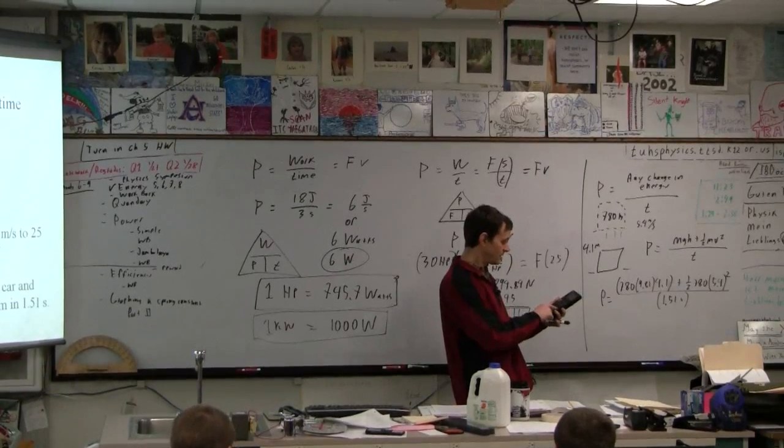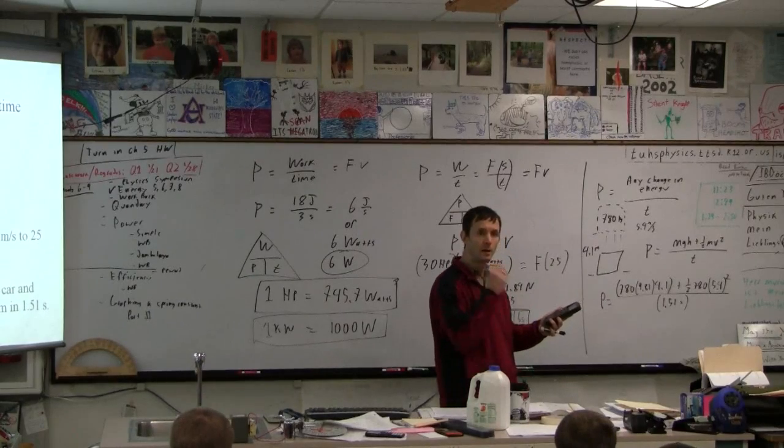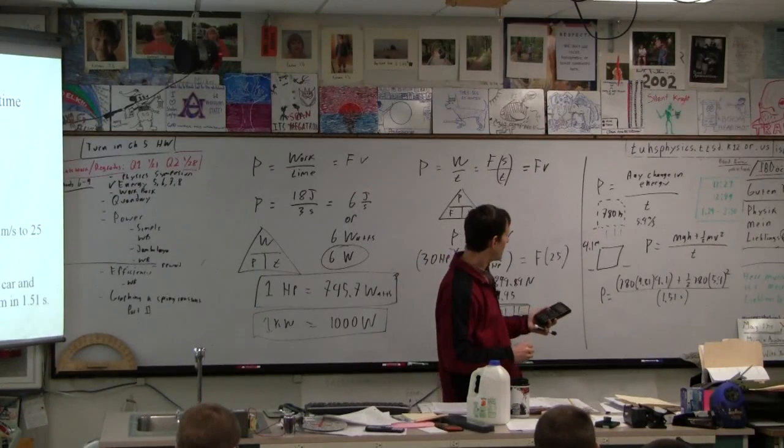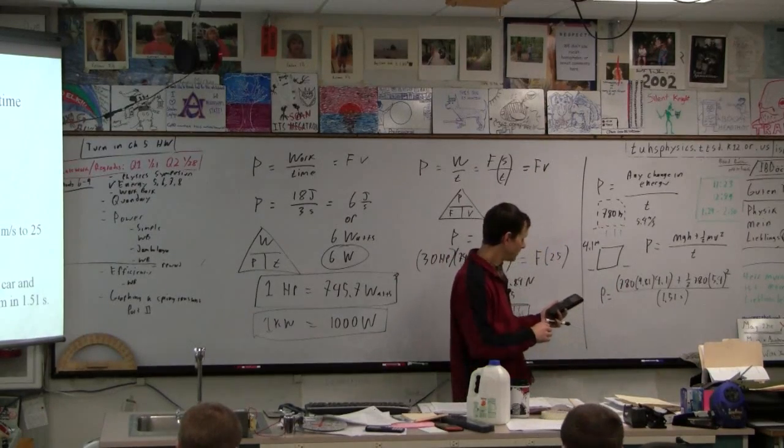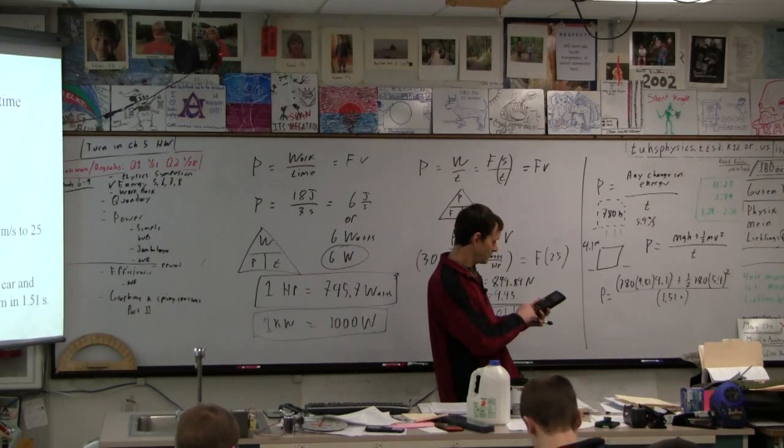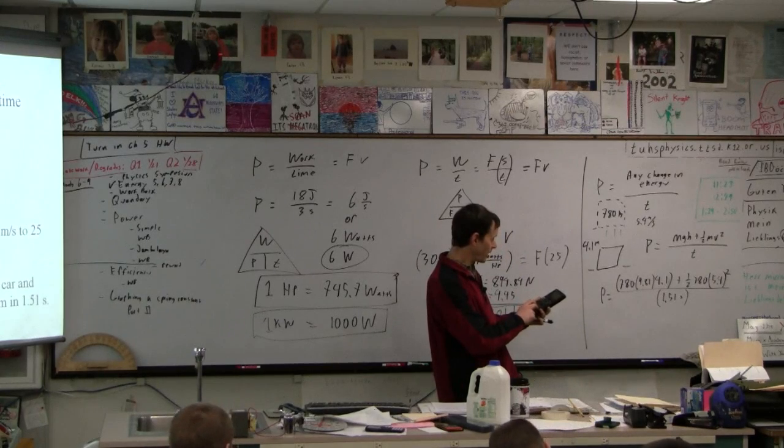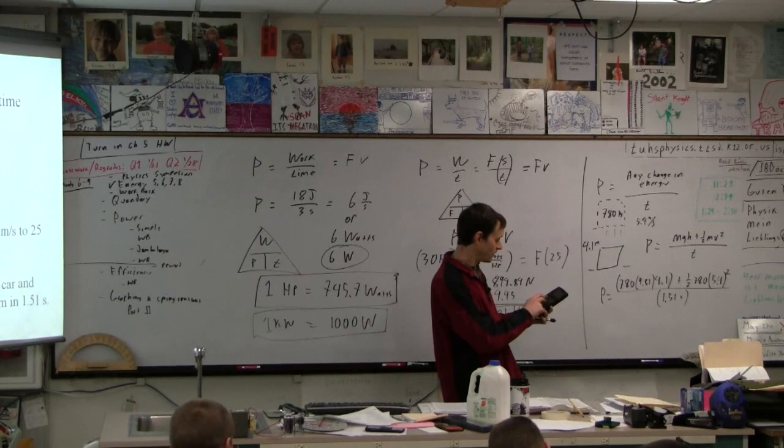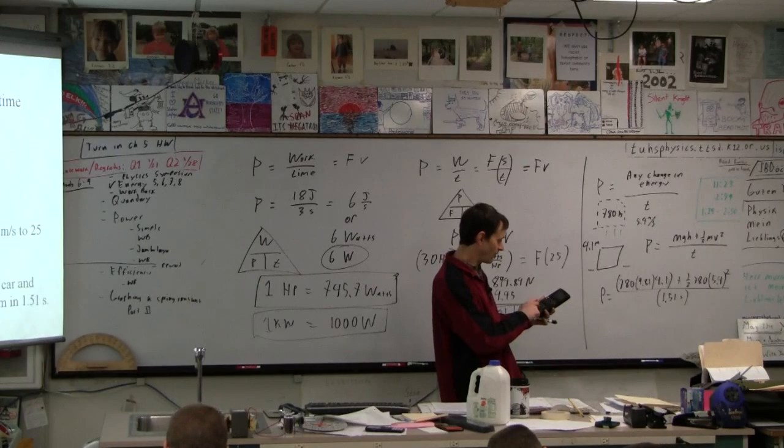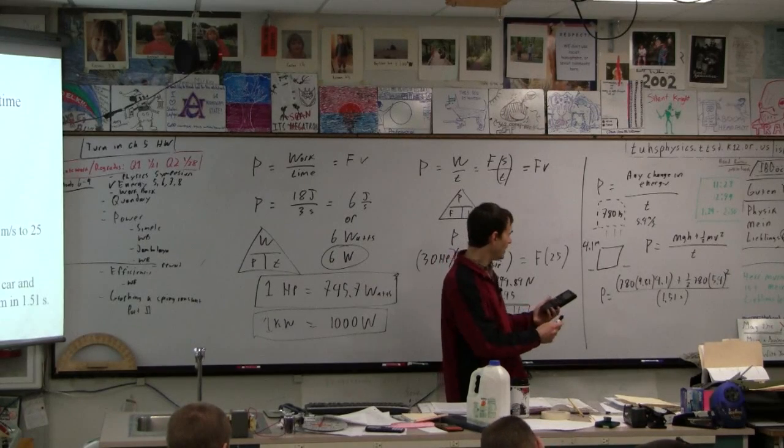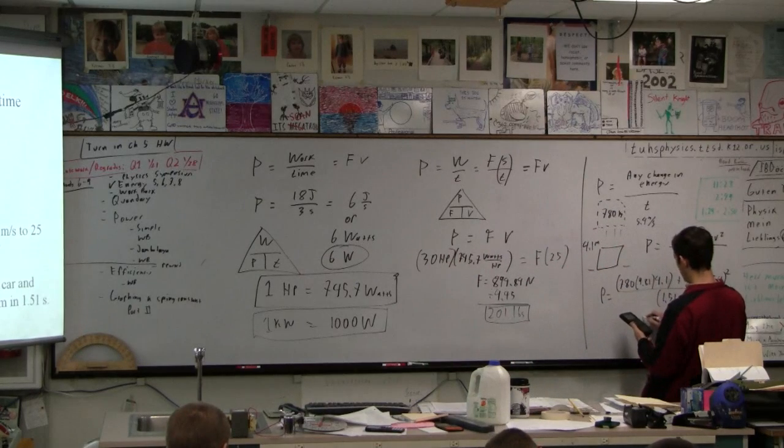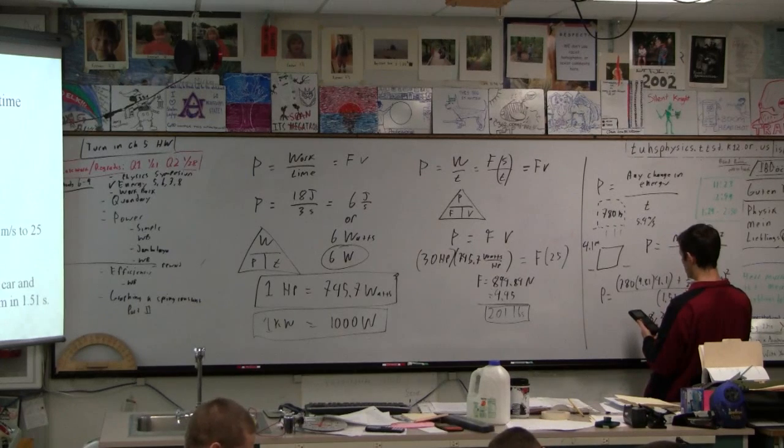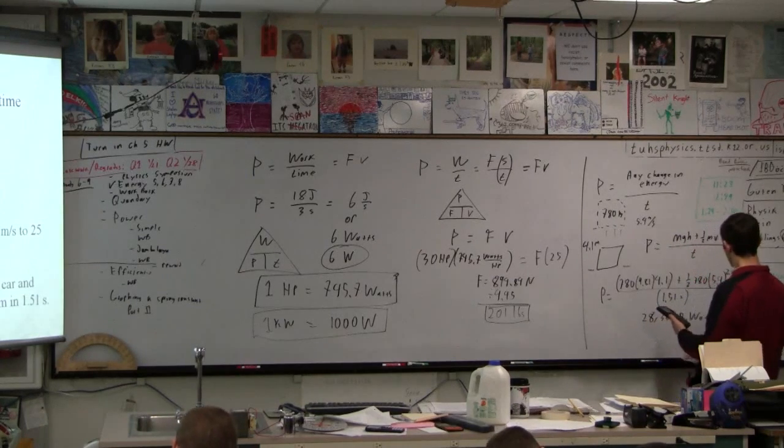So parenthesis 780 times 9.81, wait, what's our question? You have a question? 780, what's the units of 780? I'm just multiplying by 9.81. That's our potential energy, plus 0.5 times 780 times 5.4 squared, divided by 1.51. And I'm getting that this thing is kind of a lot of power, as you might guess. So I'm getting 28,307.8 watts.